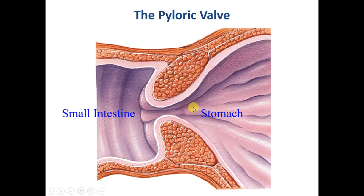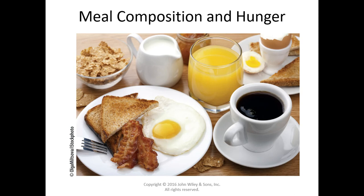There is one more valve to discuss: the pyloric valve between the stomach and small intestine. It's important as a regulator, making sure the entire stomach contents don't move into the small intestine at once. When that happens — possibly due to surgery — it's called dumping syndrome, which can cause hypoglycemia, cramping, and diarrhea. Recommendations for dumping syndrome include smaller meals, more protein, and less carbohydrate, because carbohydrates leave the stomach first, then protein, then fat.